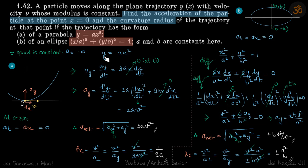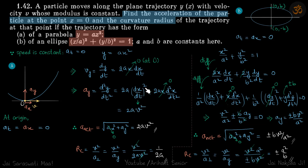We'll use the equation of trajectory: y equals ax squared. Differentiating once gives vy equal to 2ax times dx/dt. Differentiating again gives the expression for ay. At the origin, vy is equal to 0 because the slope of the curve is 0, so dy/dt must be 0. Substituting at the origin, the cross term also becomes 0, so ay becomes 2a times (dx/dt) squared, and dx/dt is v, giving ay equal to 2av squared.